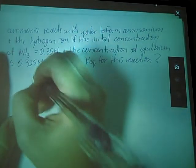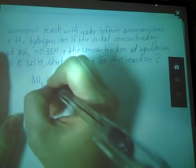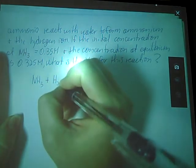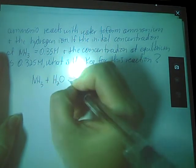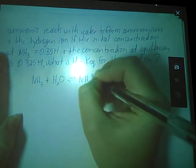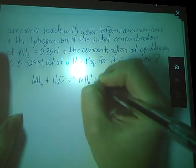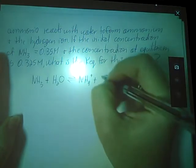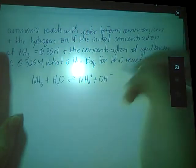So let's start by setting up our table. It tells me that ammonia, NH3, reacts with water, H2O, to form ammonium and the, oh, that's a typo. It should say hydroxide ion. I apologize.